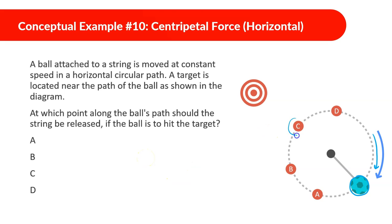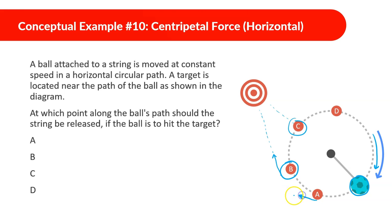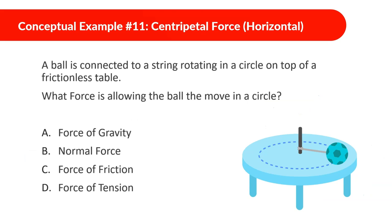Some people might say C, because if the string is released there it'll go and hit the target. However, that won't be correct. What happens is if the ball is over here and the string is released, it's going to be moving in a tangential direction — tangent to the circle. If the ball was released at A it'd be a tangent going one way, at C another way, and D another way. So B is the correct answer; it'll fly tangentially toward the target.